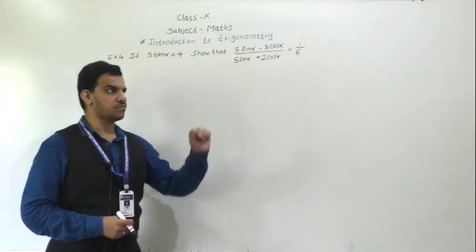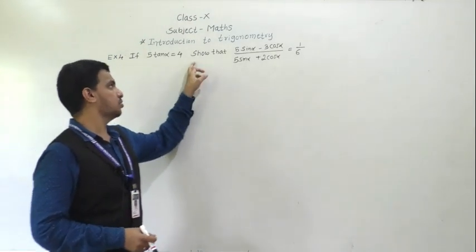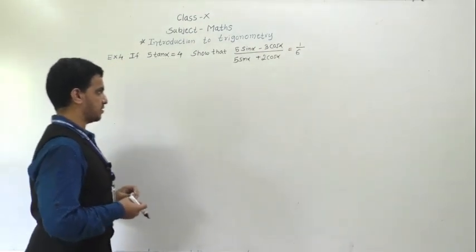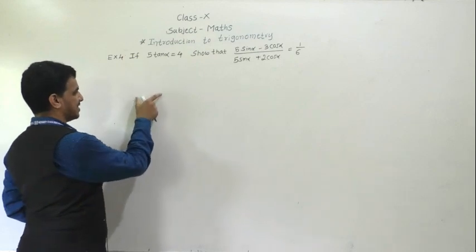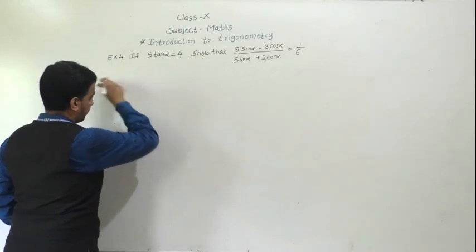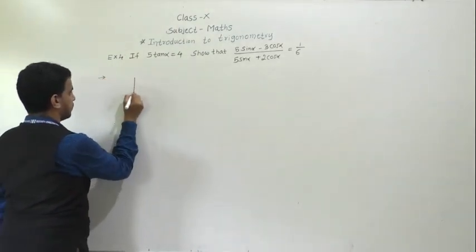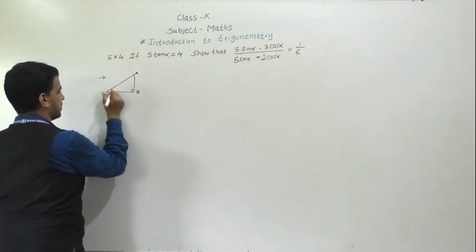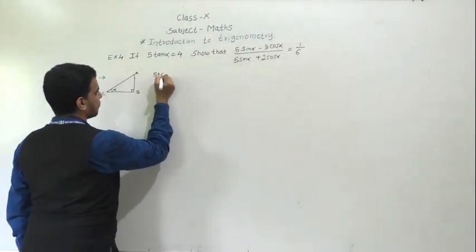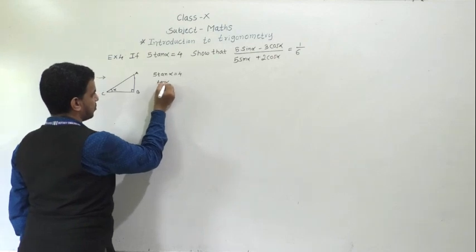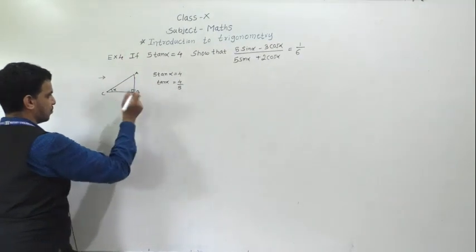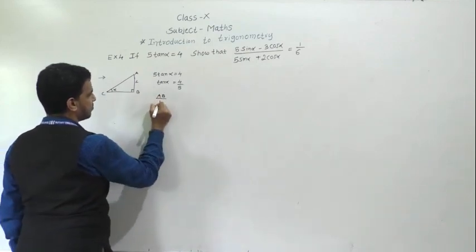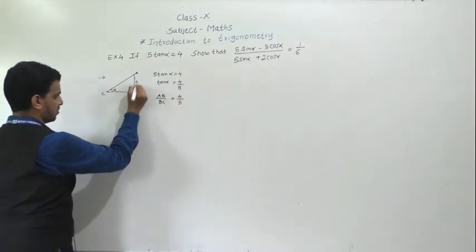Now the fourth example. If 5 tan α equals 4, show that (5 sin α - 3 cos α) / (5 sin α + 2 cos α) equals 1/6. There are two methods to solve this. First method: draw the right triangle ABC with right angle at B, and angle α at A. From 5 tan α = 4, tan α = 4/5. So tan α equals opposite side AB by adjacent side BC, giving AB = 4 and BC = 5.